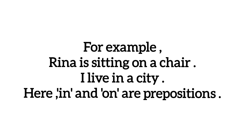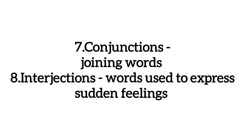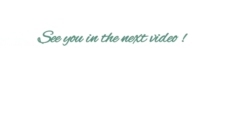और number seven क्या होती हैं? Conjunctions — इन्हें हम joining words भी बोलते हैं. और interjections होते हैं words used to express sudden emotions or feelings. For example, conjunctions के examples हैं: and, but, or, etc. और interjections: oh, hooray. तो यह सारे words interjections होते हैं.